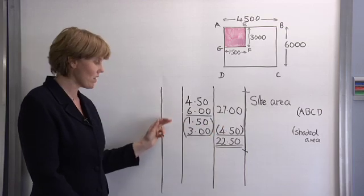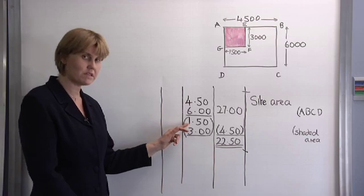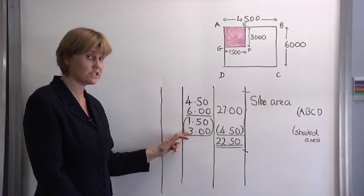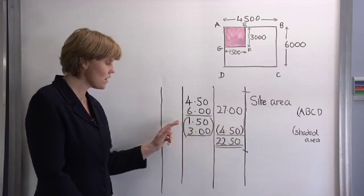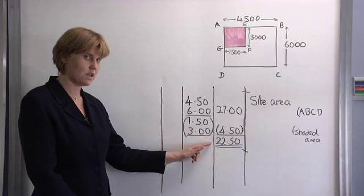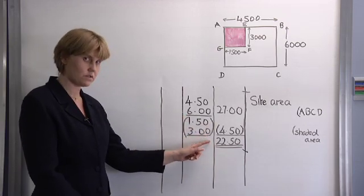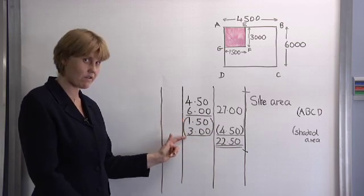Now let's look at our area we wish to deduct. That area is 1.5 metres in length by 3 metres giving us a total deduct area of 4.5 metres. Now note how we present this. We do this by the use of brackets. So these brackets denote that we have a deduct area.